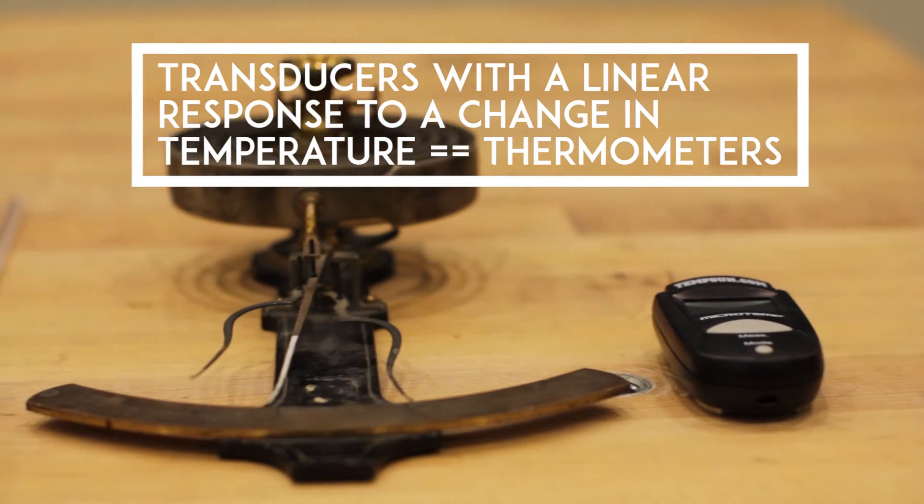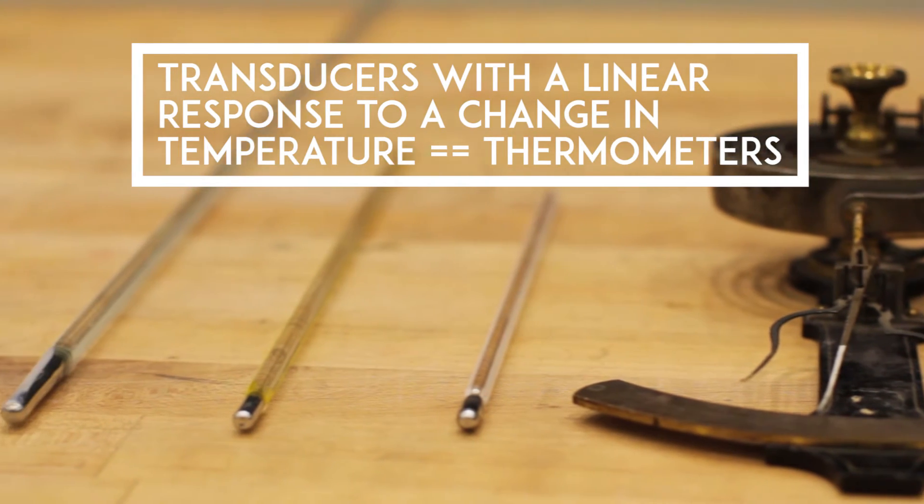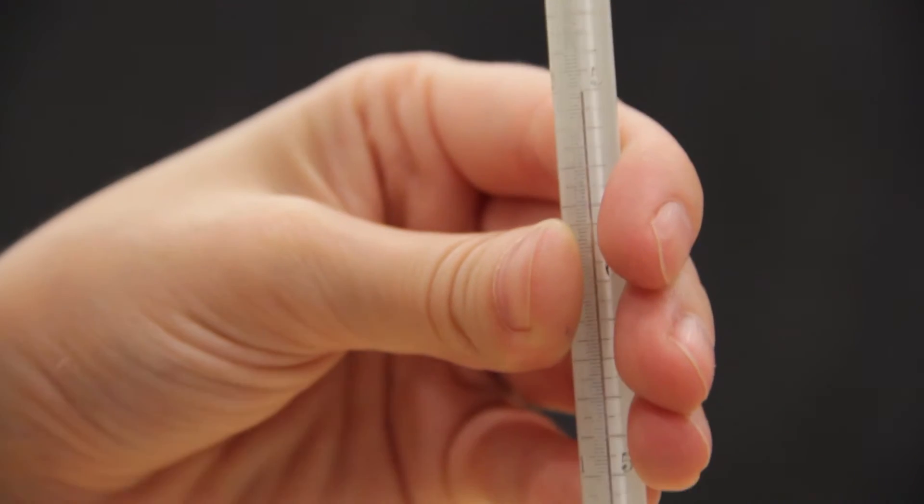Transducers that have reproducible linear responses to changes in temperature are called thermometers. Many thermometers use the volumetric expansion of liquid mercury to measure temperature.